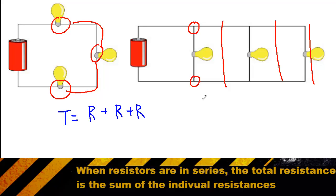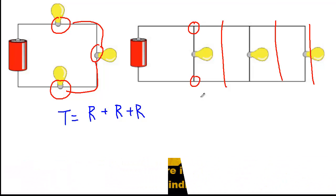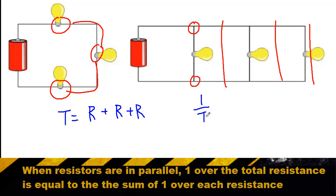In a parallel circuit, however, to find the total resistance, you add up the individual resistance as denominators of a fraction. So 1 over the total resistance is equal to 1 over the resistance from light bulb 1 plus 1 over the resistance of light bulb 2 and so on and so forth.